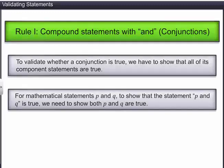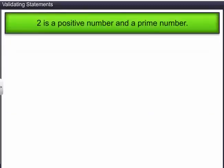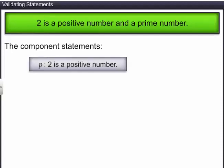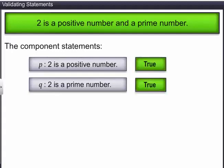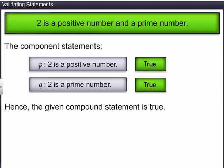Let's check the validity of the statement: '2 is a positive number and a prime number.' The component statements of this compound statement are: P — '2 is a positive number', and Q — '2 is a prime number.' We know that both component statements P and Q are true. Hence, it is validated that the given compound statement is true.